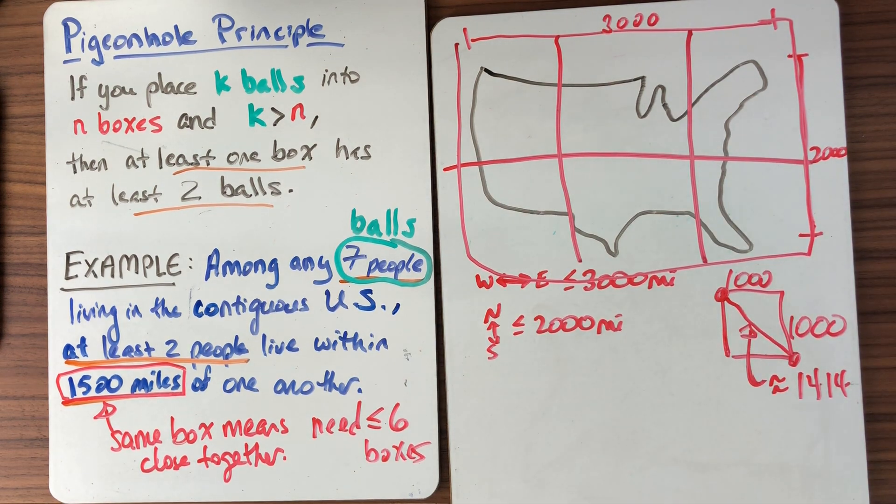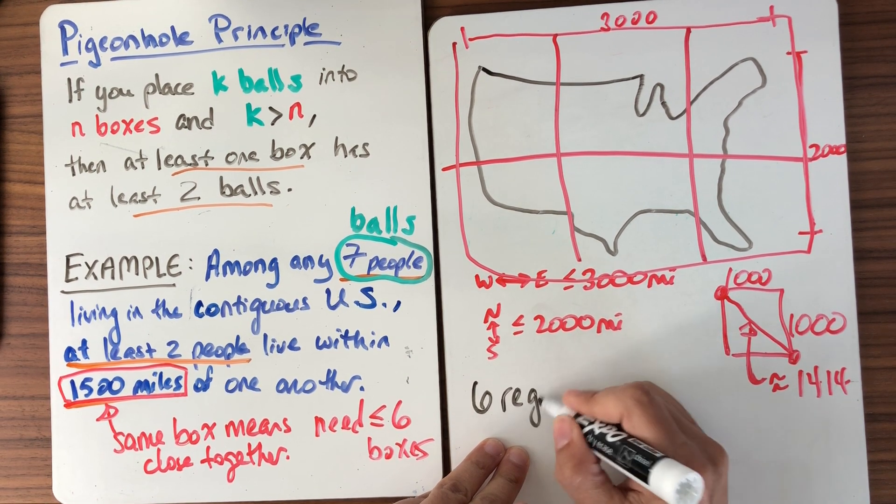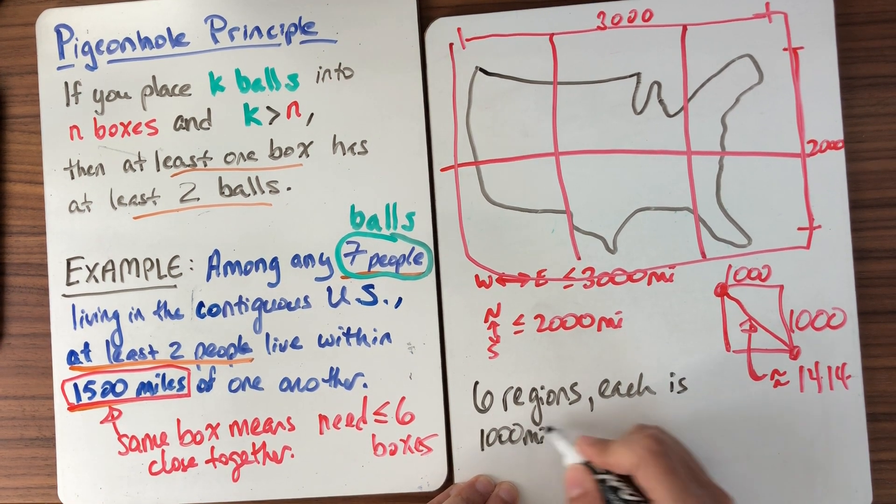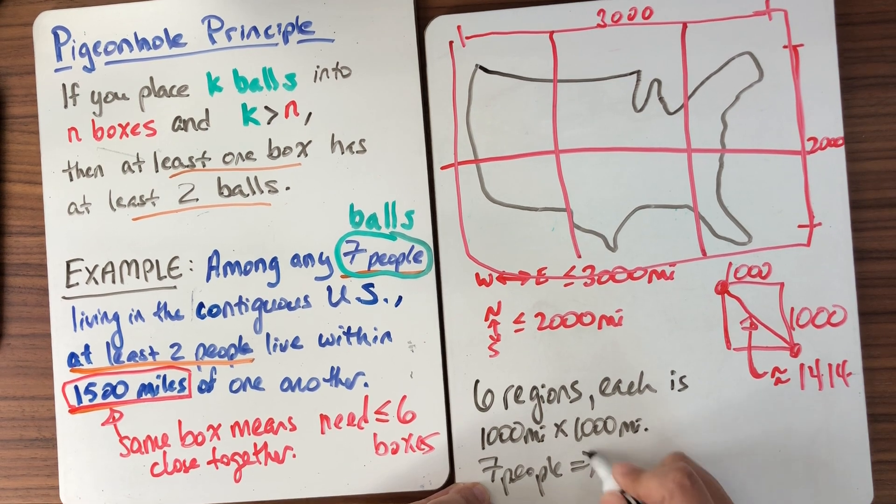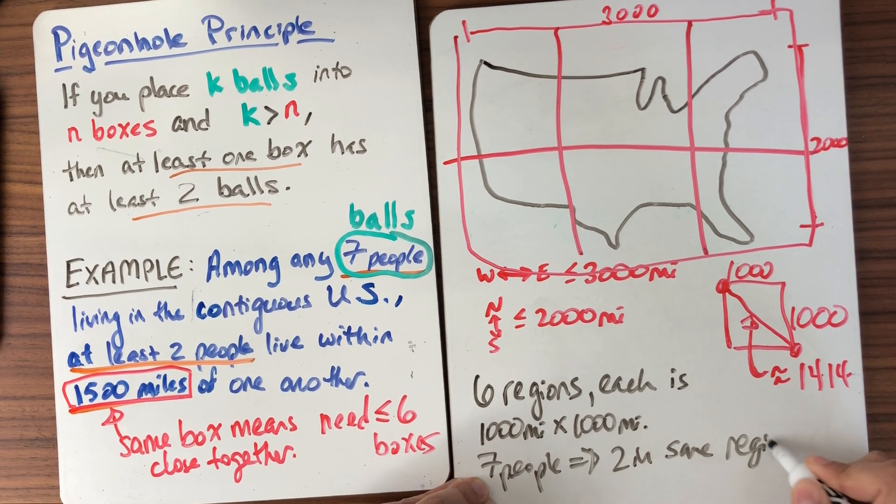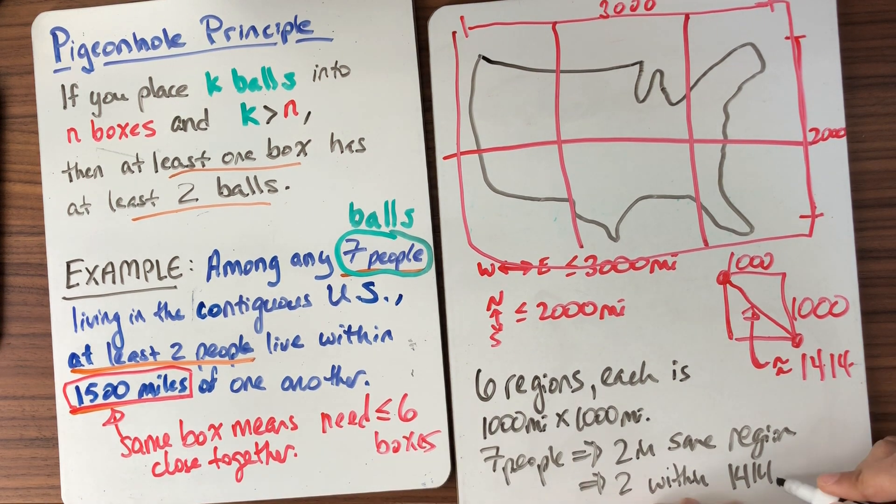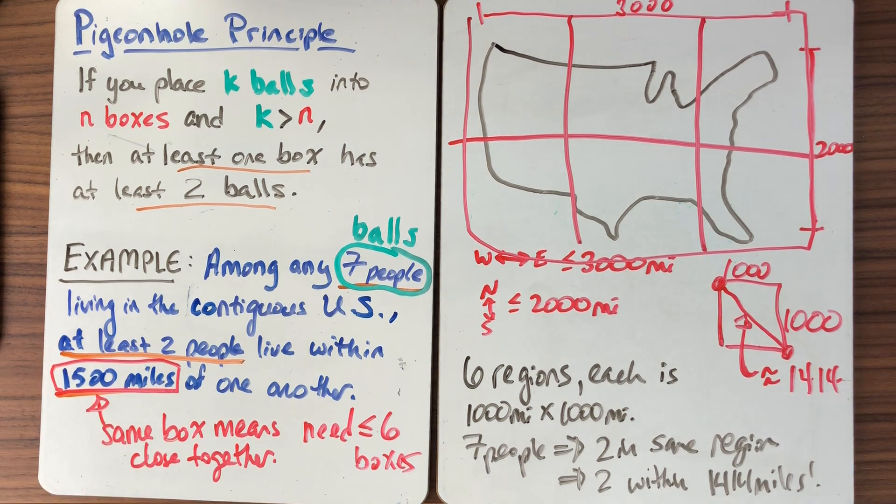So when I divide the US into these regions, I have six regions and each is 1,000 miles by 1,000 miles. Seven people means two in the same region. And that means that two within 1,414 miles of each other. So yes, it is absolutely a fact that if you take seven people, any seven people you like, living in the contiguous United States, two of them, at least two of them, will live close to one another. If by close, you mean less than 1,500 miles.